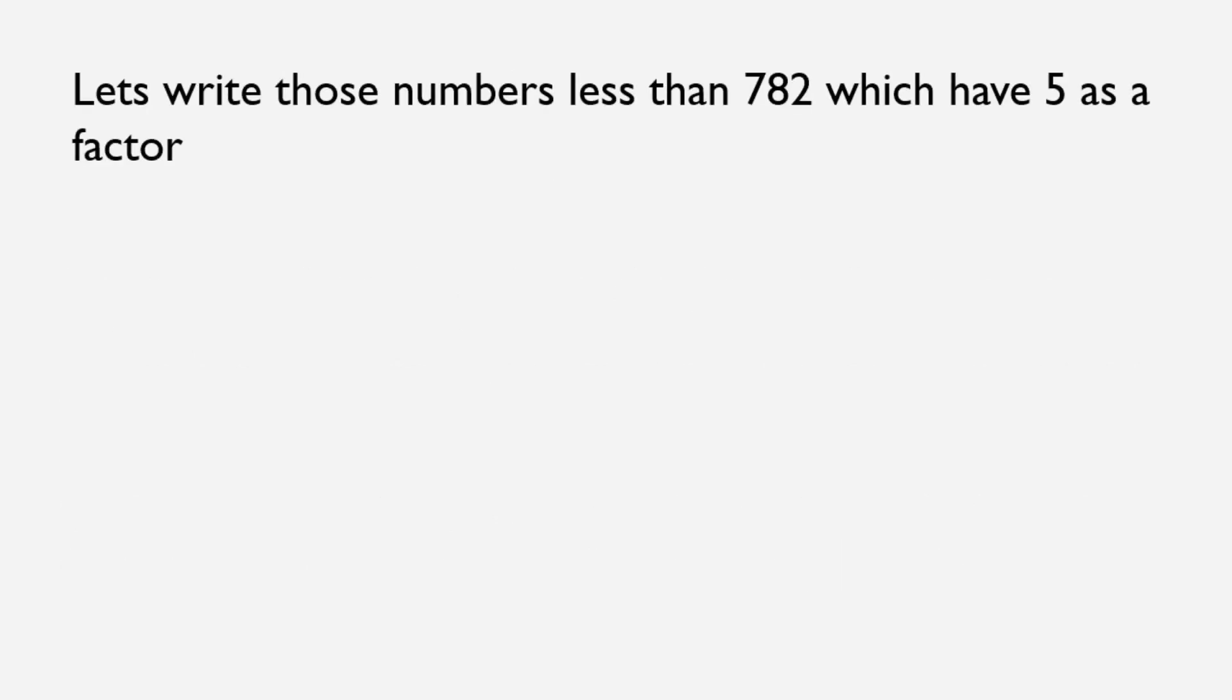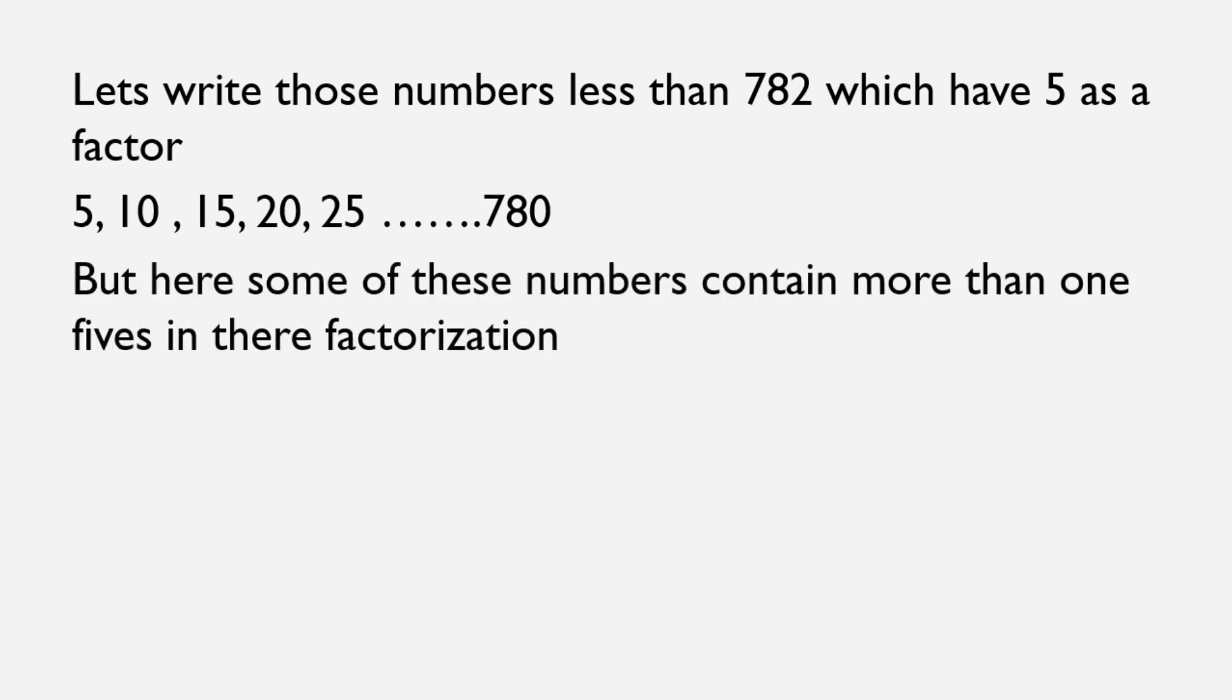So let's write those numbers less than 782 which have 5 as a factor. These numbers are 5, 10, 15, 20, and so on. So this must be the number of 5's in its prime factorization, but wait...